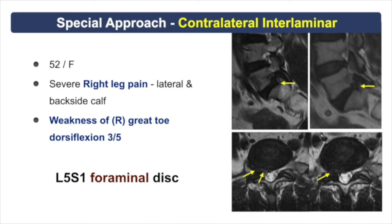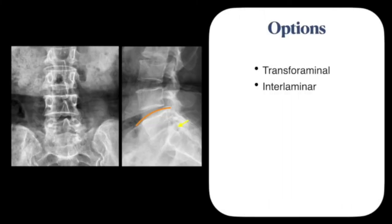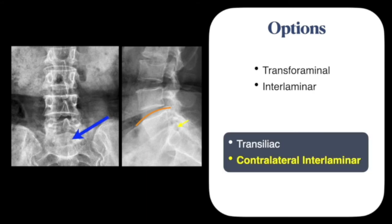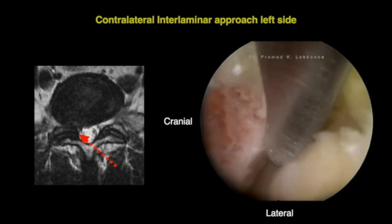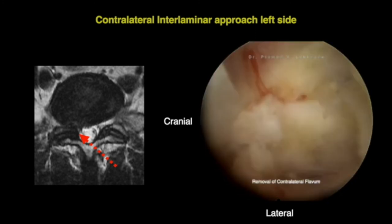Sometimes special approaches are needed. For example, this is a right-sided foraminal disc at L5-S1 causing severe pain and weakness in dorsiflexion of the great toe. The conventional transforaminal approach is not possible due to a high iliac crest, and there is a risk of injury to the exiting nerve root pushed backwards by the foraminal disc. The interlaminar approach cannot reach the ipsilateral foramen. A transiliac approach is too invasive, so we opted for a contralateral interlaminar approach.